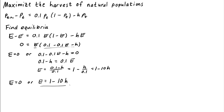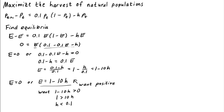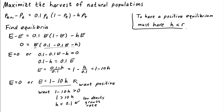So the equilibria are E equals zero or E equals 1 minus 10h. At a minimum, we want the non-zero equilibrium to be positive — if it's negative, it wouldn't be a physical equilibrium. So we want 1 minus 10h to be greater than zero, meaning h should be less than 1 tenth. Notice that this 1 tenth was the low density growth rate we put in. In order to have a positive equilibrium, we need the harvesting effort to be less than the low density growth rate. That makes a whole lot of sense: we shouldn't harvest any faster than the population can reproduce. So in general, to have a positive equilibrium, we must have h less than r. If h is greater than r, or 0.1 in this case, the population will die out and we've killed the population.